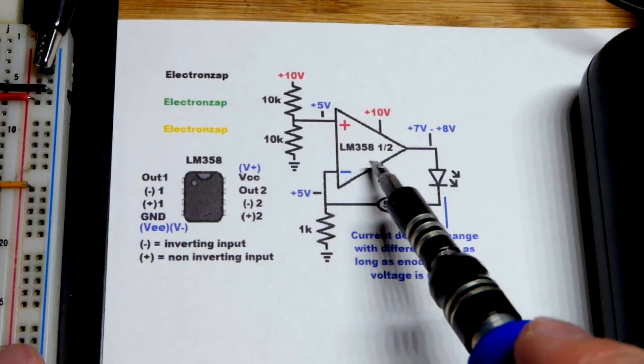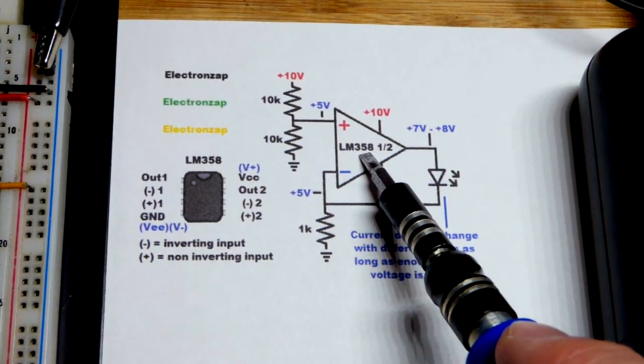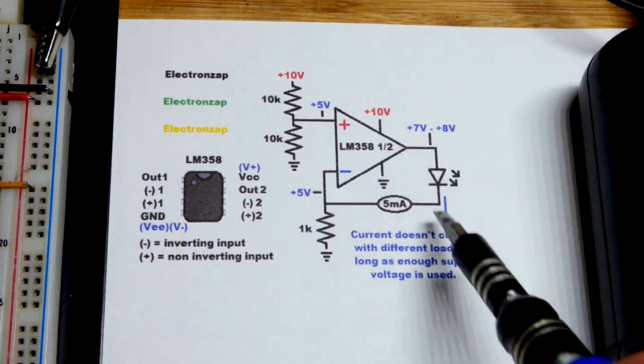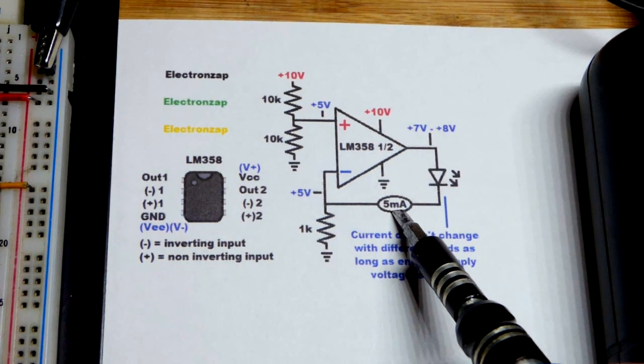In this video, we're going to look at using a single supply op amp, the LM358, as a current source.